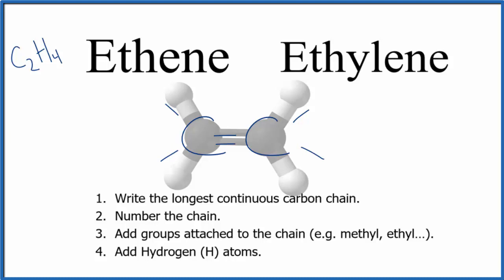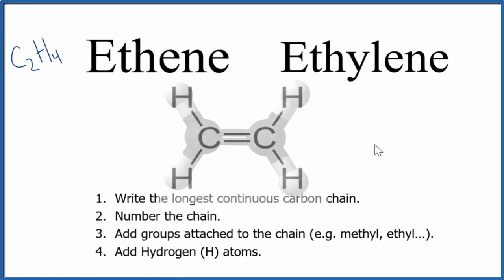Now we could even write this out here with the hydrogens drawn in. So this is the structural formula for ethene, the molecular formula C2H4. Note that ethene is the simplest form of the alkenes. We have two carbons and we have a double bond between them. You can't get any simpler.